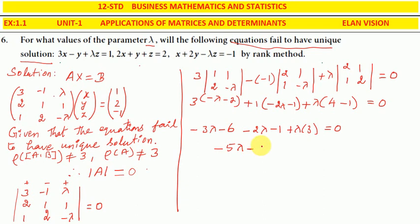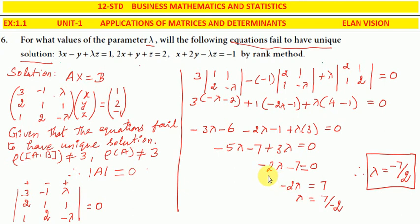Simplifying: -3lambda - 2lambda + 3lambda minus 6 minus 1 = 0. So -5lambda plus 3lambda minus 7 = 0, giving -2lambda - 7 = 0, then -2lambda = 7, so lambda = 7 divided by -2. Therefore lambda = -7/2.